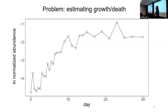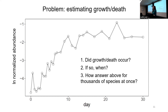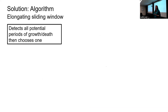This graph is an example of one species from one of my experiments, with log normalized abundance on the y-axis and time on the x-axis. At first glance, it's obviously growing — but that's not very scientific. We need a way to objectively say that growth or death did occur, to say when that period of growth or death happened, and to do that hundreds or thousands of times because of how much data we have. To tackle that problem, I created an algorithm I'm calling an elongating sliding window.